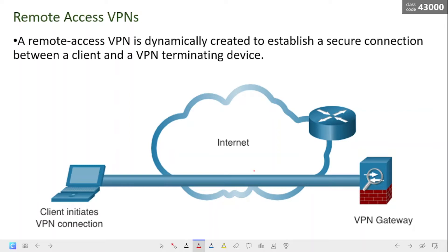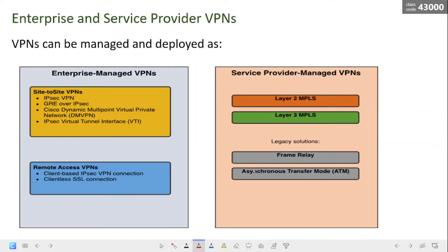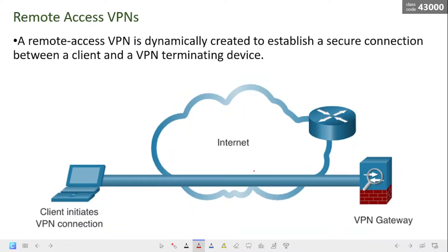Another type is the remote-access VPN, which is dynamically created to establish a secure connection between a client and a VPN-terminating device. For example, a remote-access SSL VPN is used when you check your banking information online — that is one practical example of a remote-access VPN.